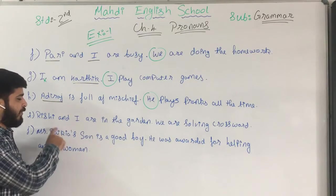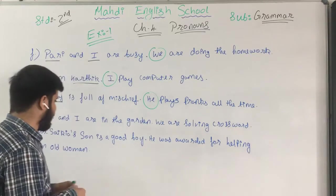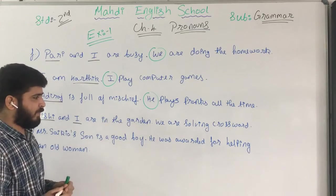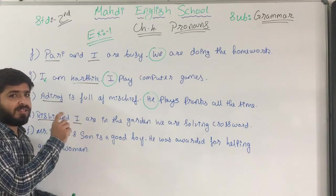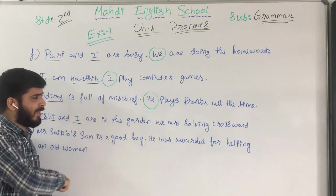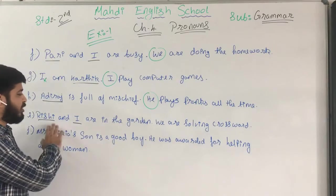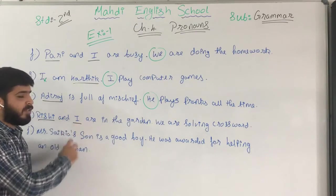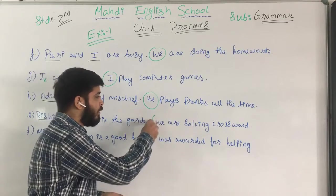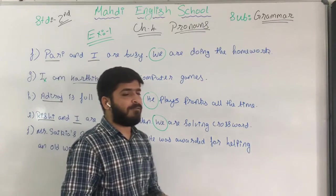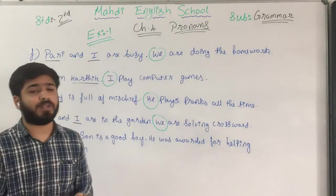Sentence I: 'Vishi and I are in the garden. We are solving crossword.' Which is the noun? Obviously Vishi and I — these two are the nouns. Note that 'I' is the personal pronoun and it is always written in capital. In the second part, 'we are solving crossword' — 'we' means Vishi and I. So here 'Vishi and I' is replaced with the pronoun 'we.'